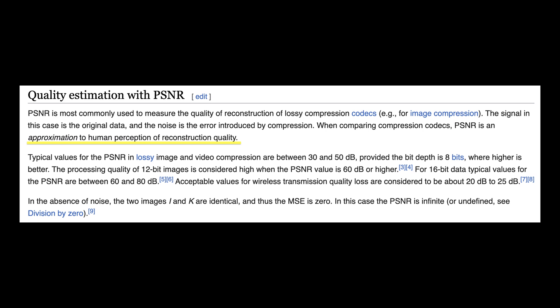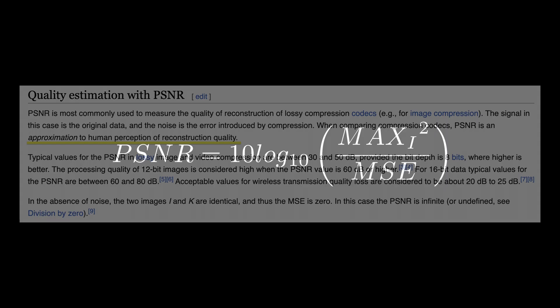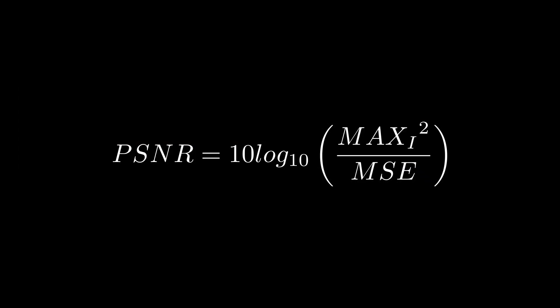According to Wikipedia, peak signal-to-noise ratio, quote-unquote, is an approximation to human perception of reconstruction quality. But, as I will talk about in just a second, some people don't agree.